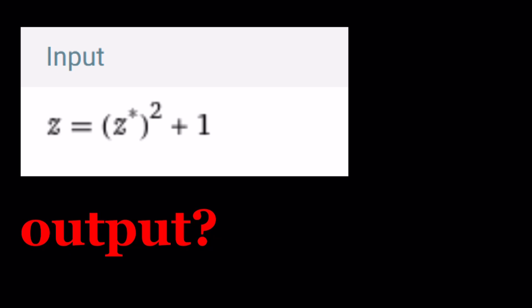Z equals, and by the way, that little star thing indicates Z bar, because I don't know why Wolfram Alpha will not use Z bar. It just uses different notation. Anyways, this is the input, and what is the output? Let's find out.